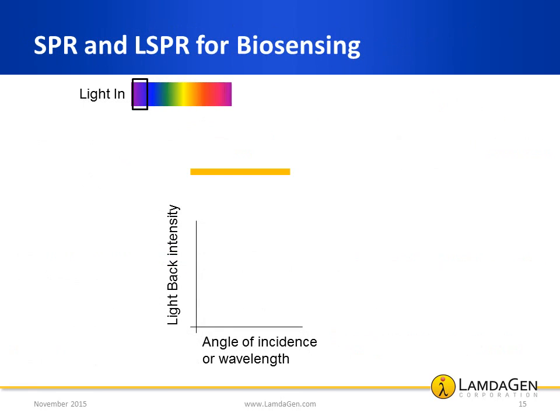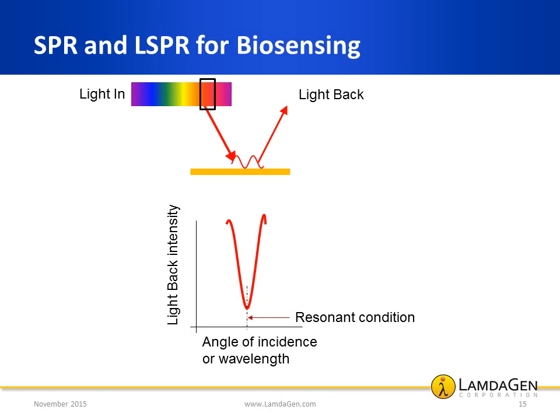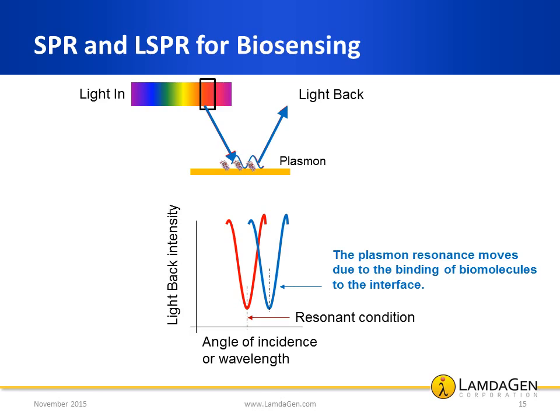Resonant conditions can be achieved by sending light onto the interface at a certain angle of incidence. If the resonant conditions are met, a surface plasmon is launched at the interface and results in a sharp decay of the reflected light. This can be accomplished by scanning the angle of incidence of light at a fixed wavelength or by using a broad light source with multiple wavelengths. In fact, the resonant conditions in both SPR and LSPR are very sensitive to the nature of the interface. If a thin layer of biomolecules is absorbed onto the interface, the resonant conditions change. Even though the change may be very slight, it is measurable.